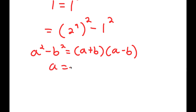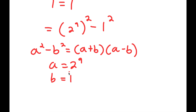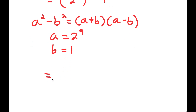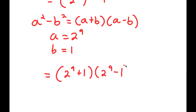So I have 2 to the power of 9 squared minus 1 squared, where a is 2 to the power of 9 and b is 1. So now I get 2 to the power of 9 plus 1 times 2 to the power of 9 minus 1.